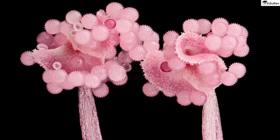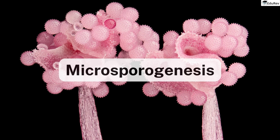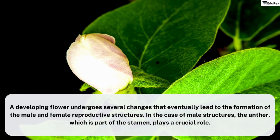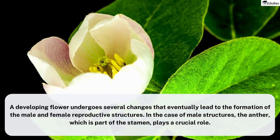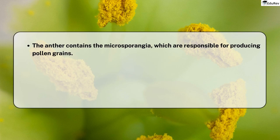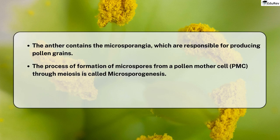Microsporogenesis: moving towards the process of pollen formation, we need to understand microsporogenesis, which eventually leads to the formation of pollen grains. When a flower is developing, it undergoes several changes that lead to the formation of male and female reproductive structures. In the case of male structures, the anther — which is part of the stamen — plays a crucial role. The anther contains the microsporangia, which are responsible for producing pollen grains. The process of formation of microspores from a pollen mother cell (PMC) through meiosis is called microsporogenesis.